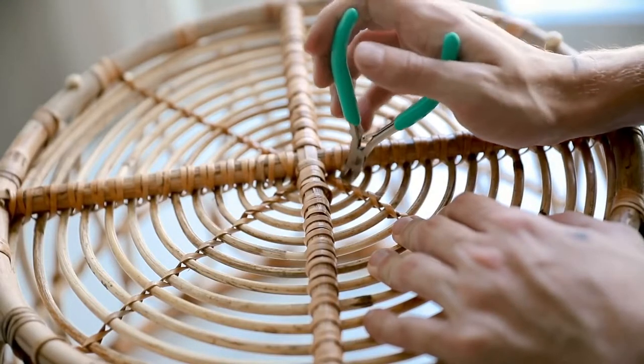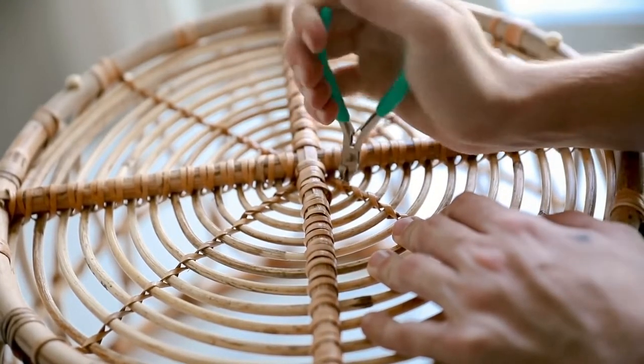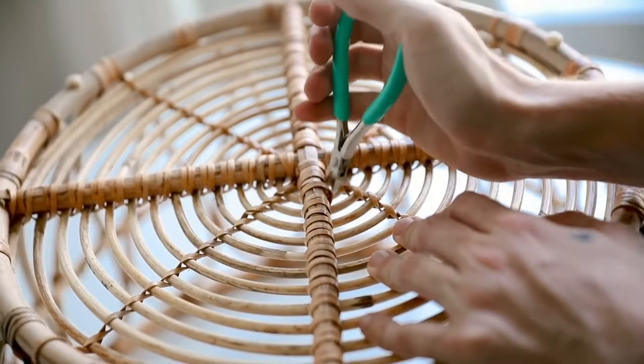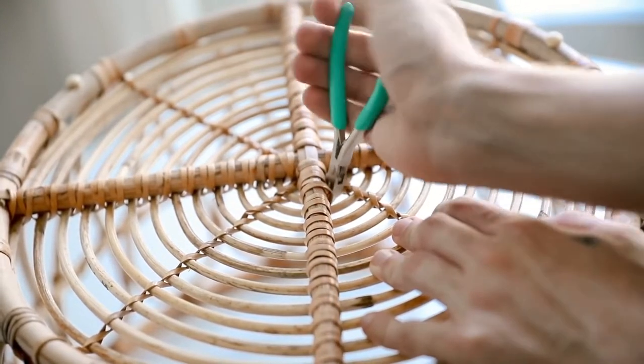Once those handles were removed, I flipped the basket over and we're going to have to create a bit of an opening because these sections at the bottom are too close together to fit the cord through.